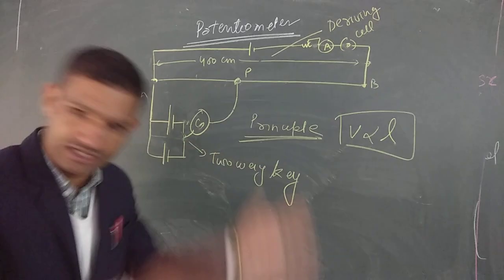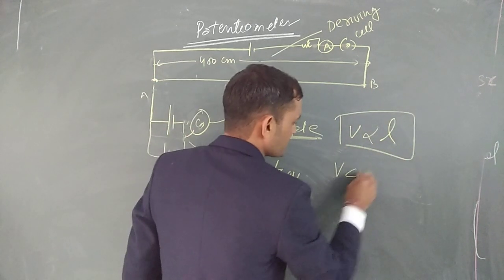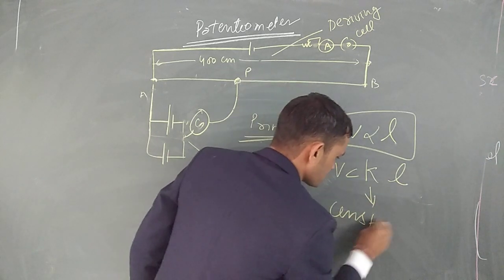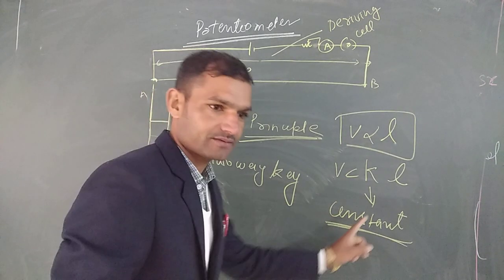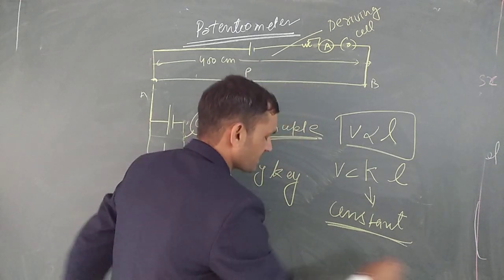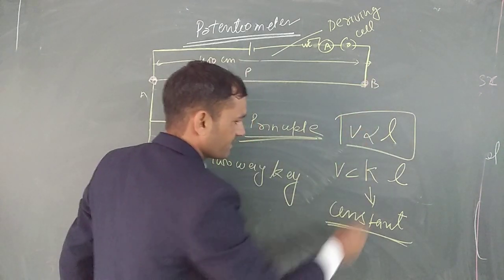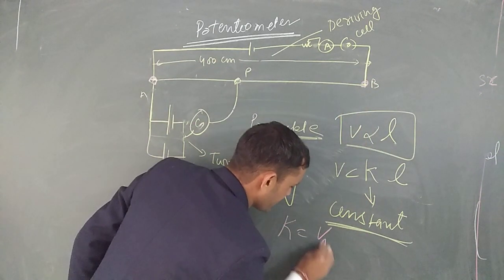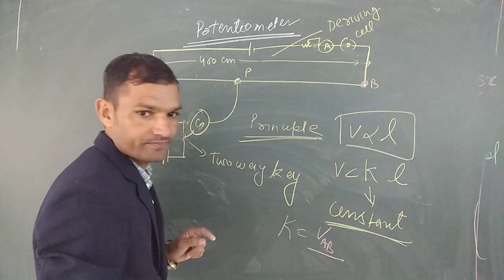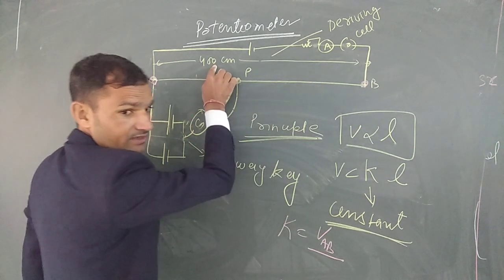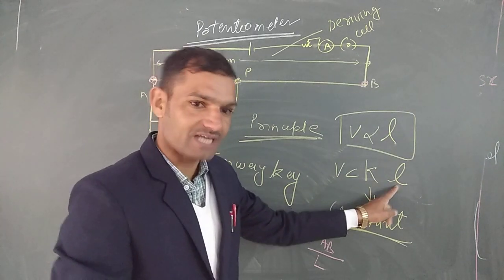V is equal to KL, where K is a constant known as the potential gradient. The potential gradient is the potential V divided by the length of that portion of the wire.